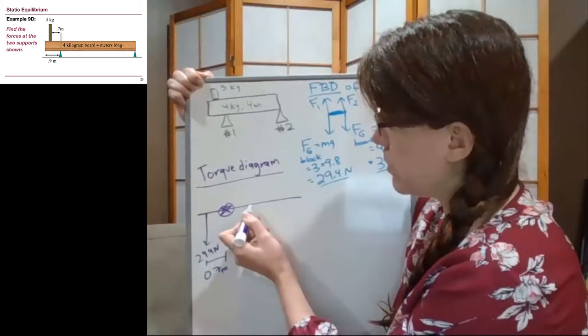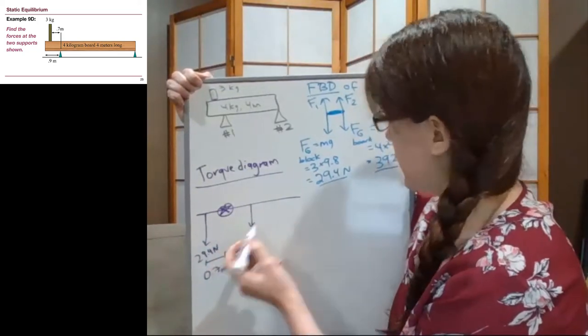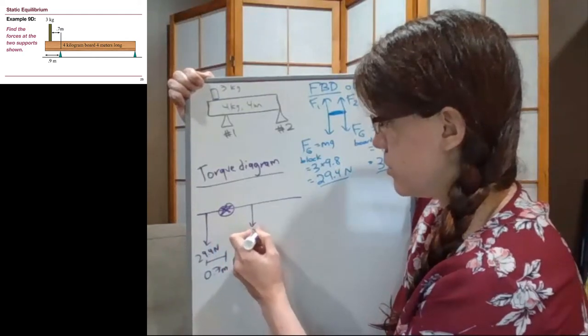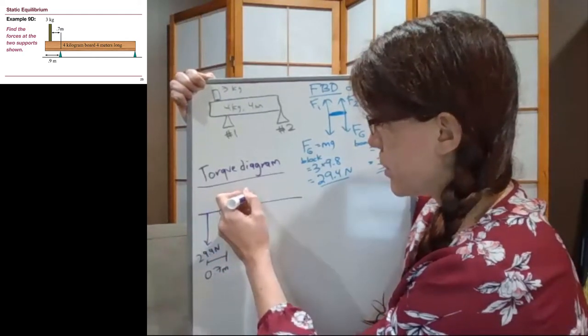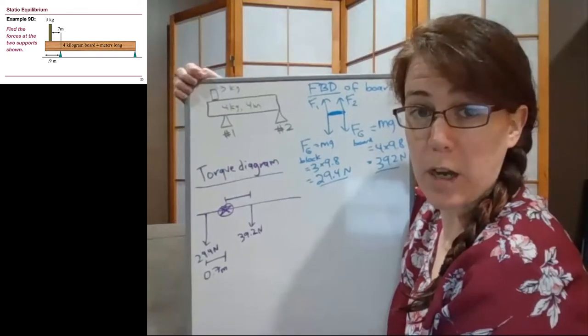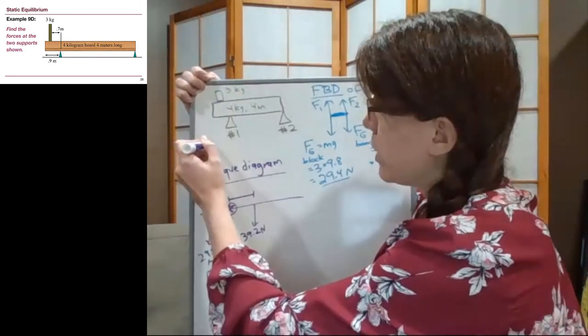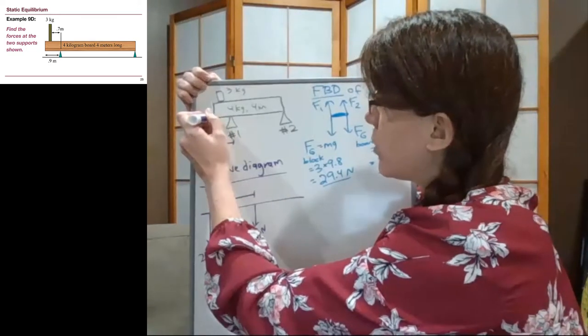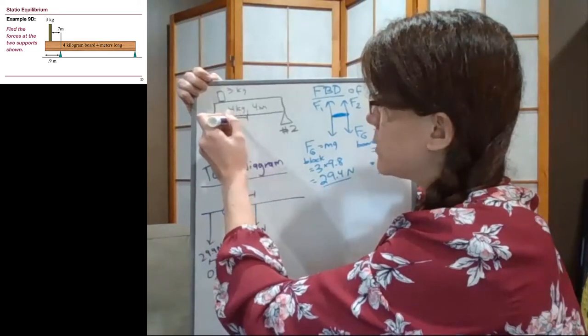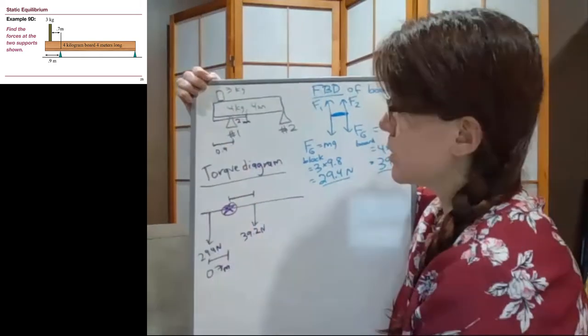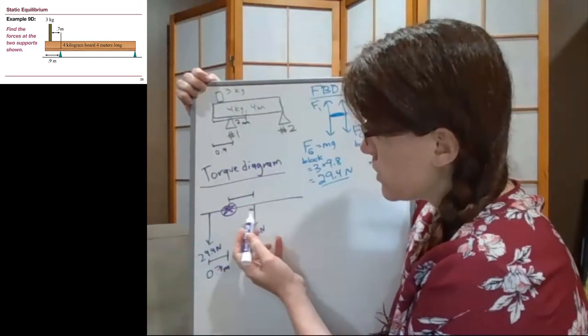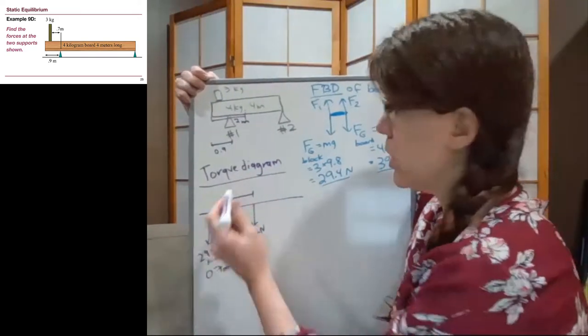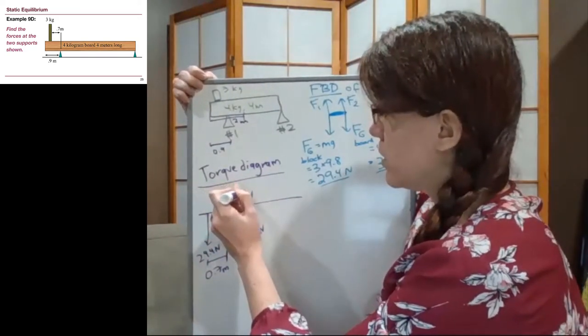I keep going, and I'm going to get to the force of the board, which is 39.2 newtons. And that force I'm going to put up here, we need to do a little bit of math for. We know that this distance in the picture is 0.9, and we know that halfway to the board is 2 meters, halfway to the center. And so the distance from the axis to the center is 2 minus 0.9, or 1.1 meters.